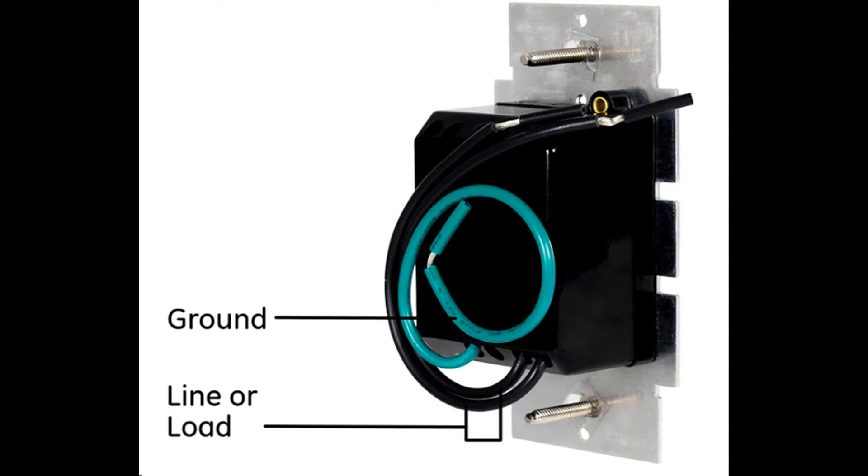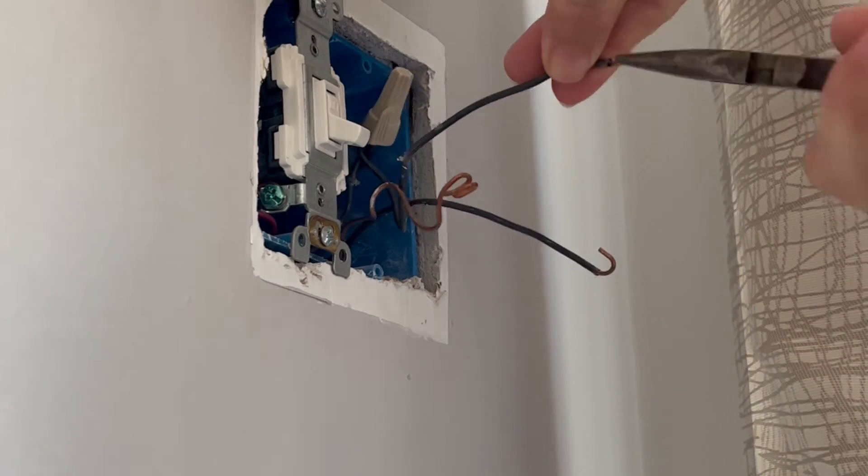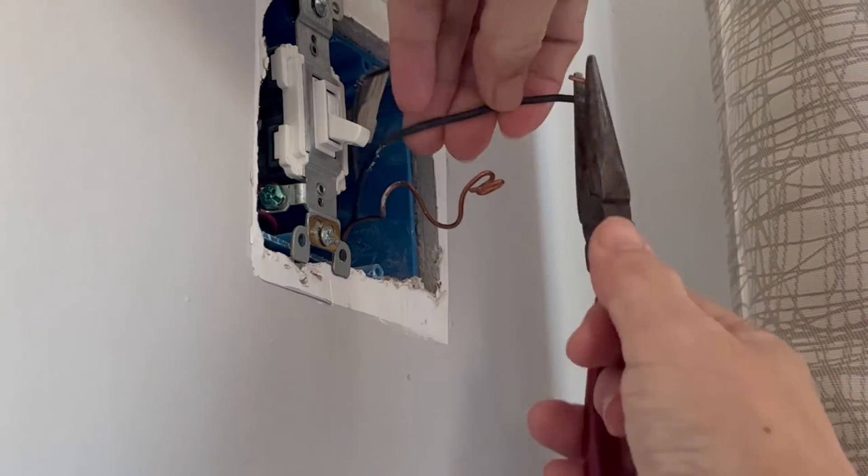Sometimes your dimmer might have one green wire and two black wires. Now I'm just straightening the wires in the box so that I can connect them to the wires on the dimmer.